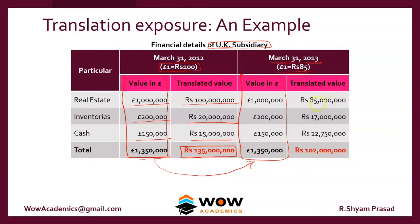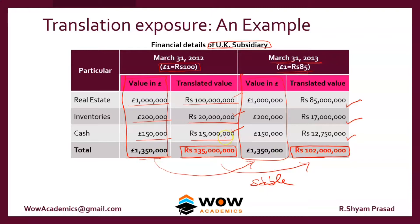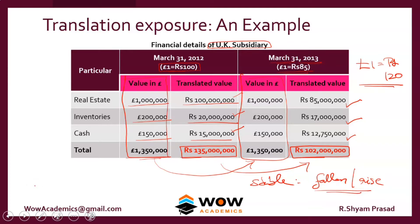The value in pounds has not changed — the figures remain the same. But the translated value changes: what was 10 crore rupees becomes 8.5 crore, 2 crore becomes 1.7 crore, and 1.5 crore becomes 1.275 crore. The value of the UK subsidiary is stable in pound terms, but the translated value in rupees has fallen. It can also rise — for example if 1 pound becomes 120 rupees. Either way, this represents a currency risk.